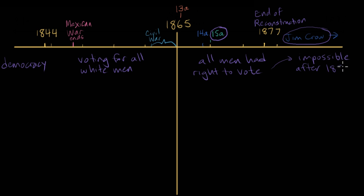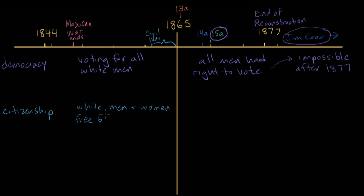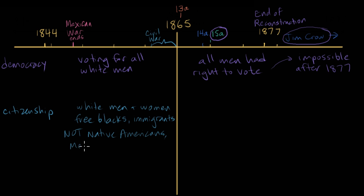Now let's look at how values around citizenship changed before and after the Civil War. Who was a citizen before the Civil War, and who was considered eligible to be part of the American people? Well, white men and white women, definitely. Free people of color in the North, with some limitations depending on their state of residence. Immigrants arriving from Ireland and Germany were eligible for citizenship. But Native Americans were considered to be members of separate nations, not Americans. Mexican Americans in the territories acquired in the Mexican Cession were technically American citizens, but had few legal protections. And enslaved people in the South were still considered property, not citizens.